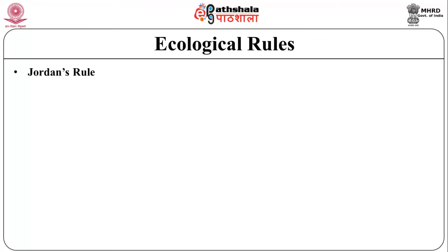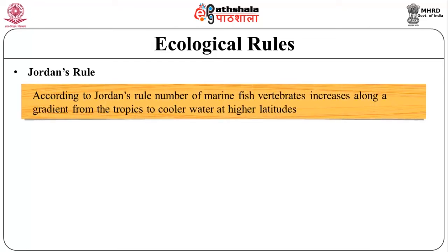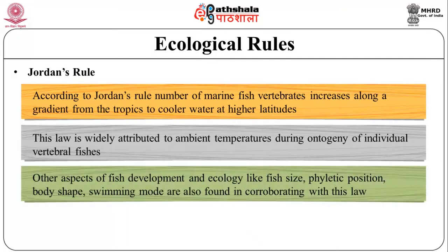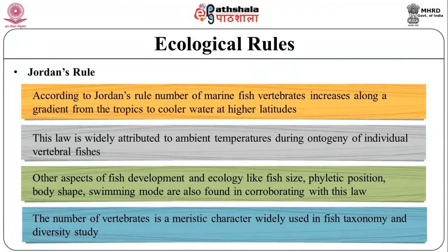Another rule is Jordan's Rule. According to this rule, the number of vertebrae in marine fish increases along a gradient from the tropics to cooler water at higher latitudes. This law is widely attributed to ambient temperatures during the ontogeny of individual vertebral fishes. Other aspects of fish development and ecology — like fish size, phyletic position, body shape, and swimming mode — are also found to corroborate this law. The number of vertebrae is a meristic character widely used in fish taxonomy and diversity studies.